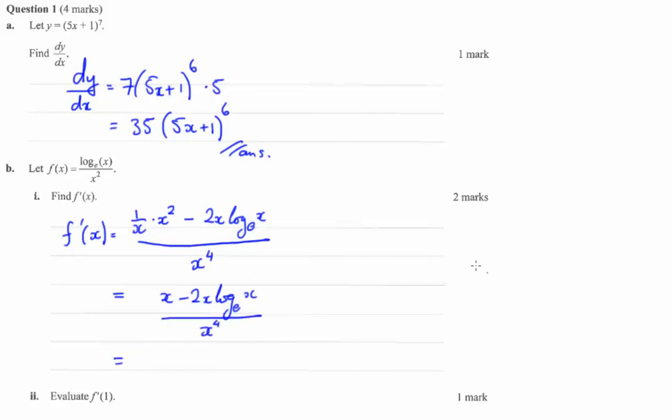To get your full marks, you're likely to need to simplify this. You can see you've got x as common to both these terms. So it should become 1 minus 2 times the natural log of x, all over x cubed. And that would be your answer for part i.